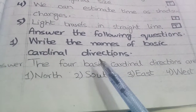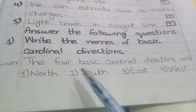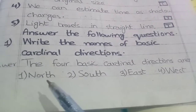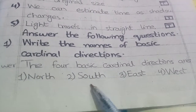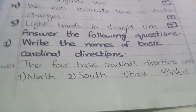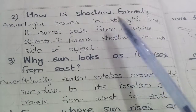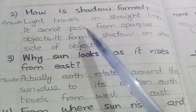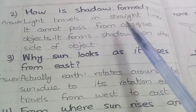Answer the following questions. Write the names of the basic cardinal directions. The four basic cardinal directions are: North, South, East, and West. How is shadow formed? Light travels in a straight line.